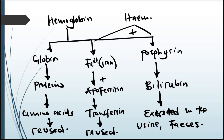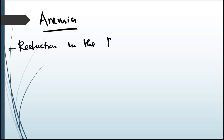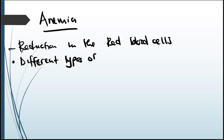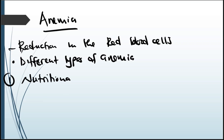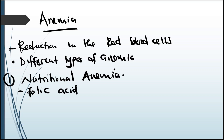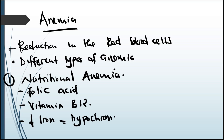Now let's talk about anemia. Anemia is a condition where there is a reduction in the red blood cells. There are different types of anemia. Number one: nutritional anemias — where you have anemia due to a lack of certain nutrients. Decreased folic acid intake causes megaloblastic anemia. Decreased vitamin B12 causes pernicious anemia. Decreased iron in your diet causes hypochromic anemia.